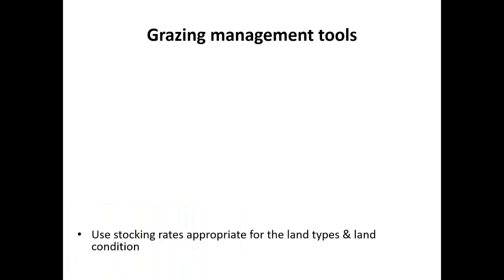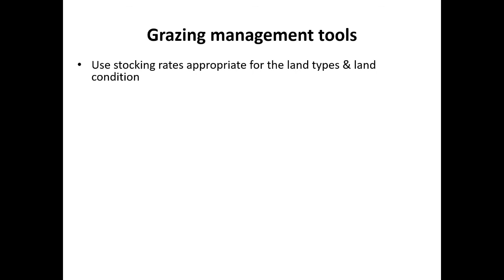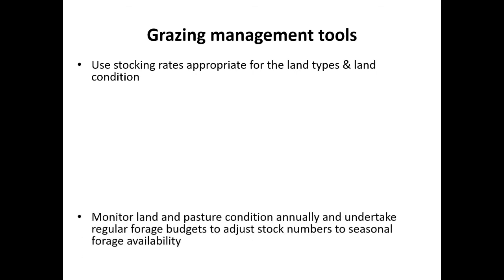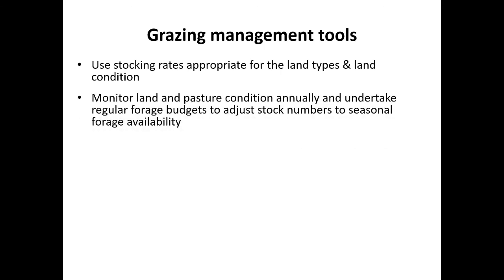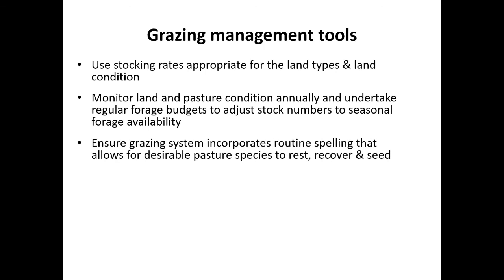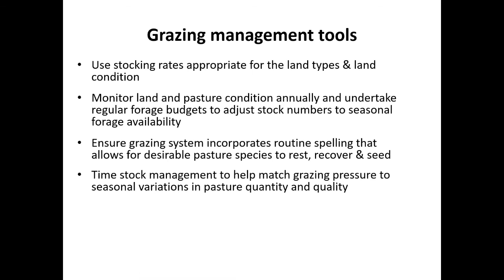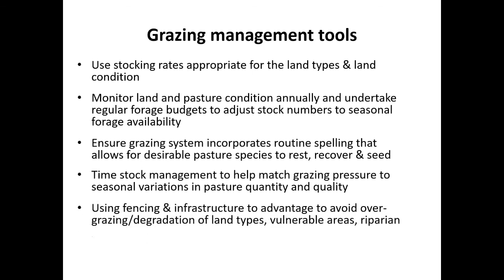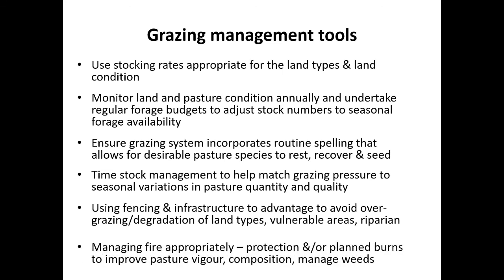Grazing management tools to maintain land in good condition include using stocking rates appropriate for the land types and land condition, monitoring land and pasture condition annually, and undertaking regular forage budgeting to adjust stock numbers to seasonal forage availability. We can ensure our grazing system incorporates routine spelling that allows desirable species to rest, recover and set seed, and time stock management activities — joining, calving, weaning, selling — to match seasonal variations in pasture quality and quantity. We can use infrastructure to manage particular land types and vulnerable or riparian areas, and think about how we use fire in the landscape for protection or planned burns to improve pasture vigour, composition and manage weed load.